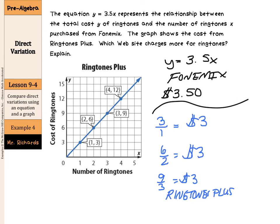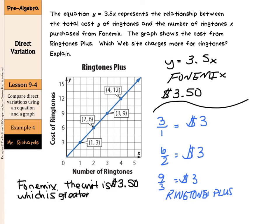So, when I go to compare these direct variations, phone mix charges $3.50 per ringtone. Ringtones plus charges $3 per ringtone. So, which website charges more for ringtones and explain? I would say that phone mix. The unit rate is $3.50, which is greater than $3.00.